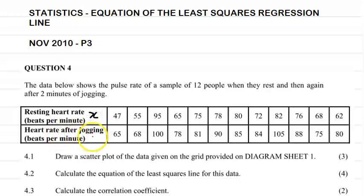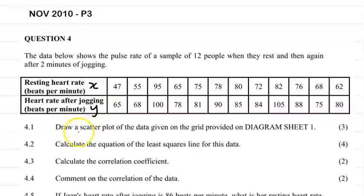So the resting heart rate is going to be our x variable and the heart rate after jogging is going to be our y variable. It says draw the scatter plot of the data given on the grid provided in diagram sheet one.